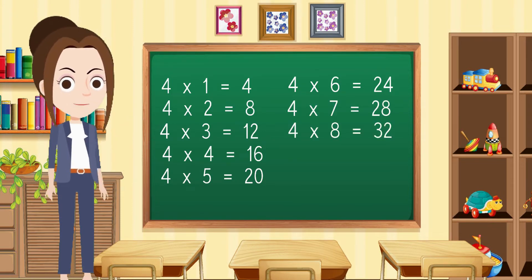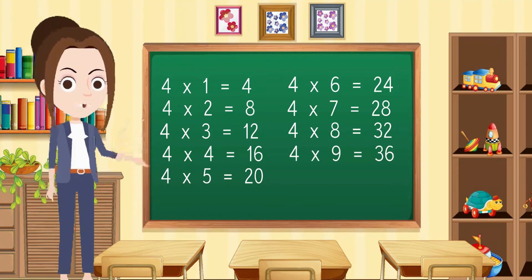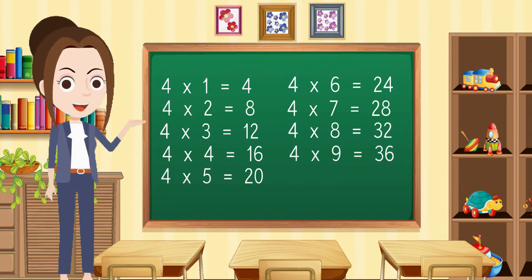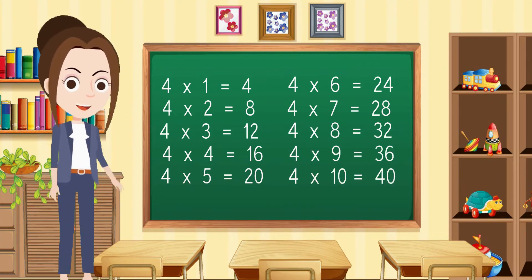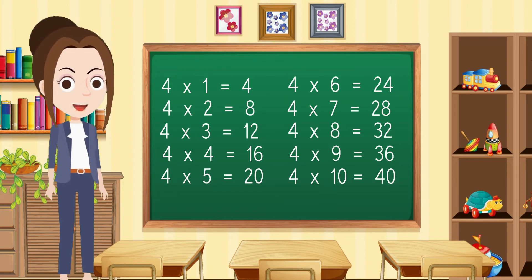Four eights are thirty-two. Four nines are thirty-six. Four tens are forty.